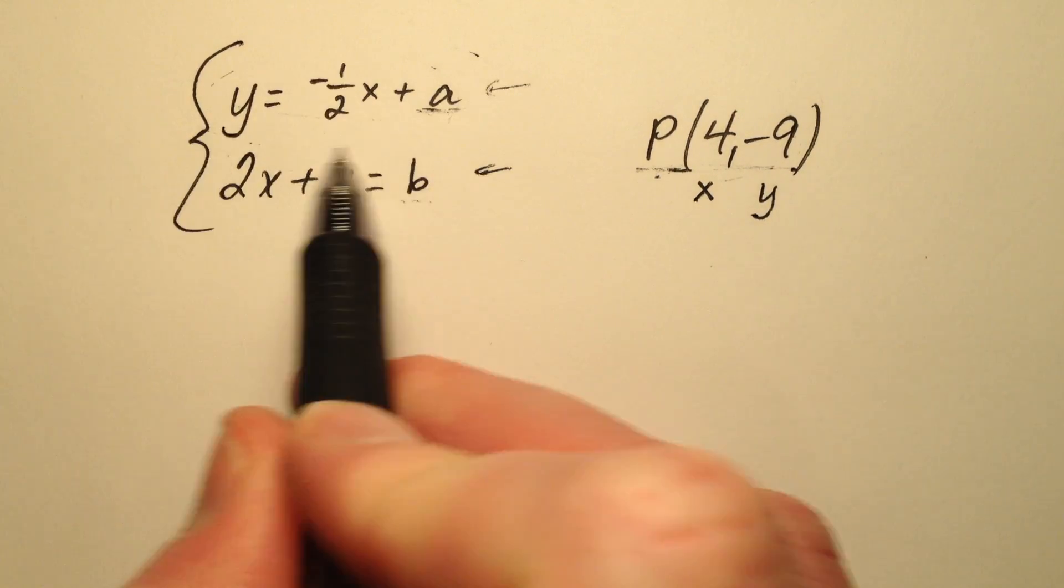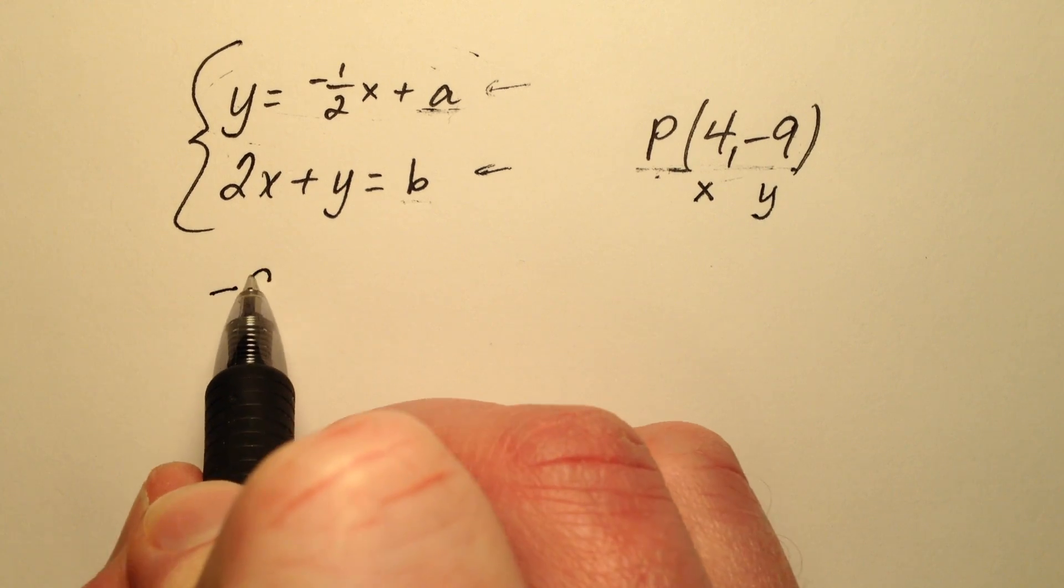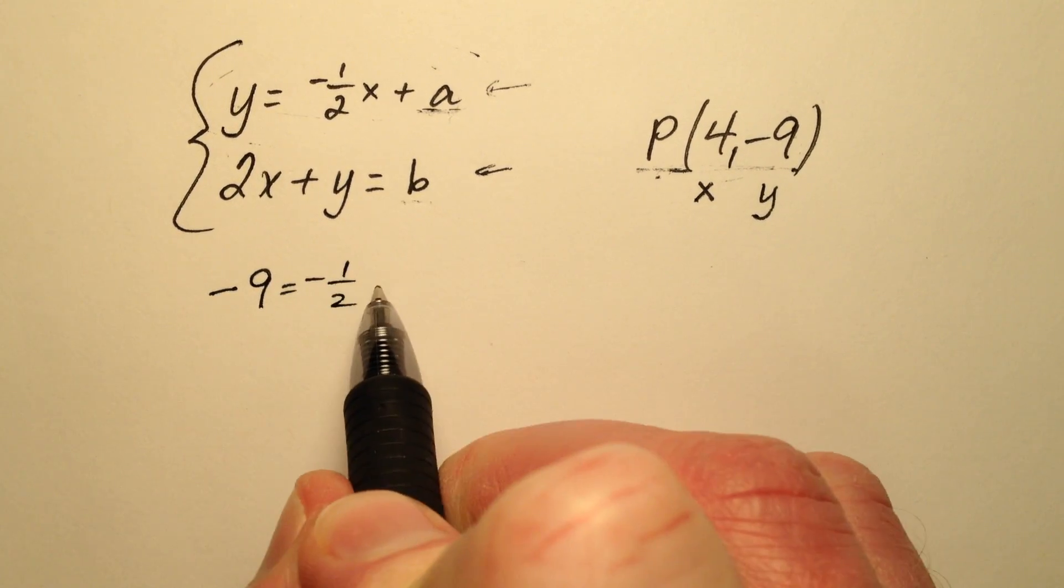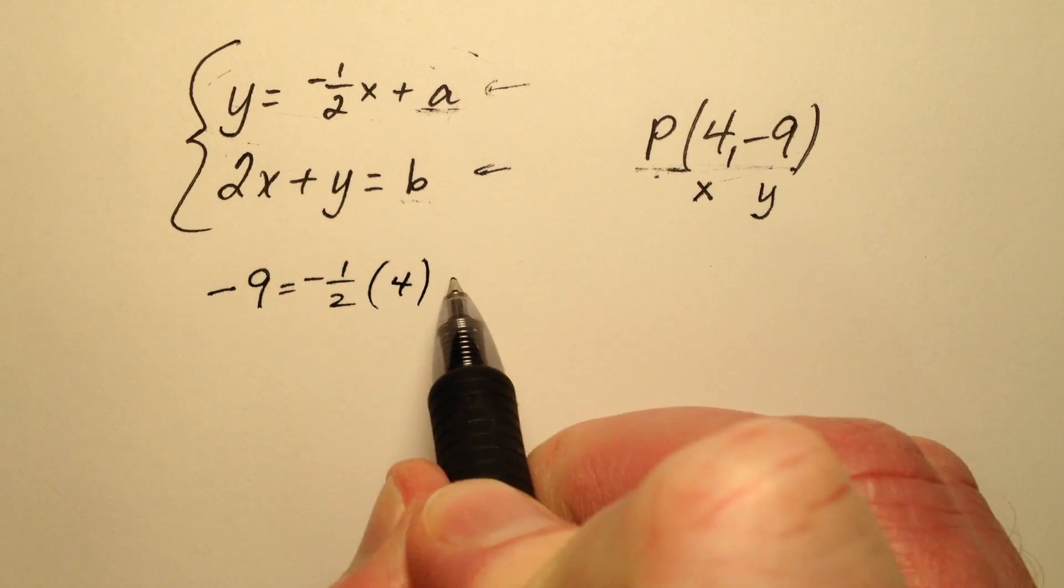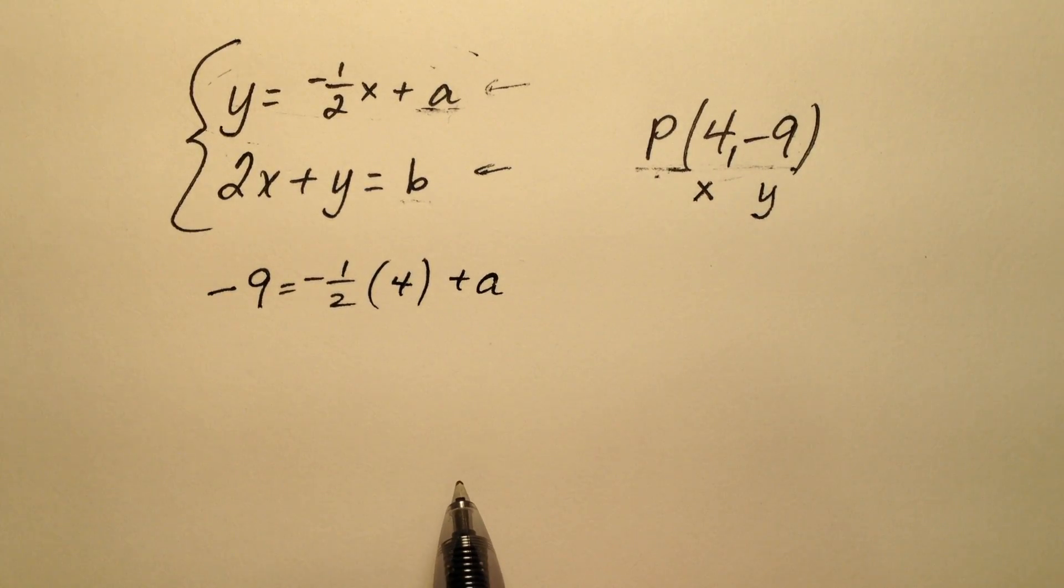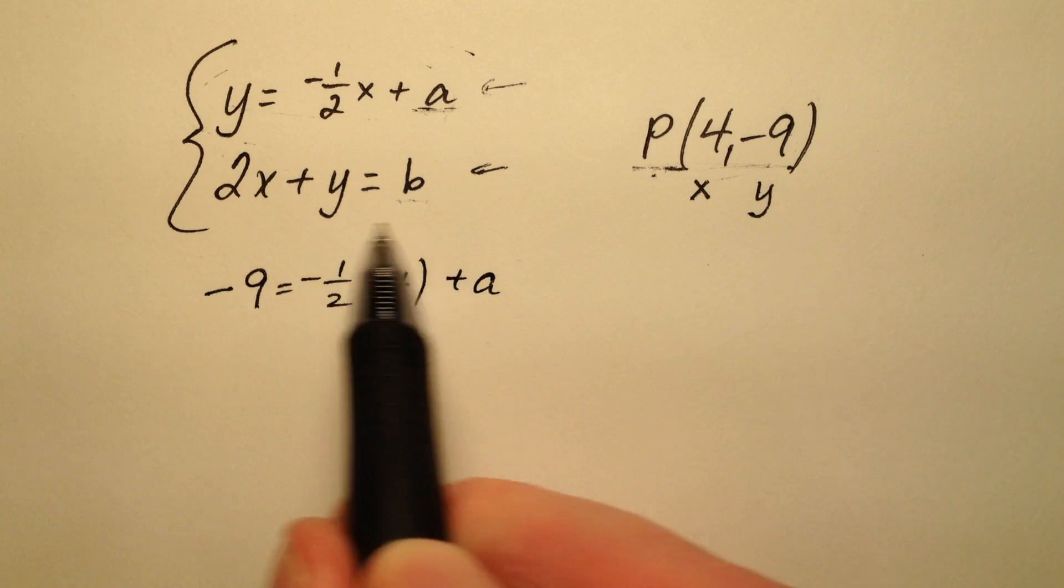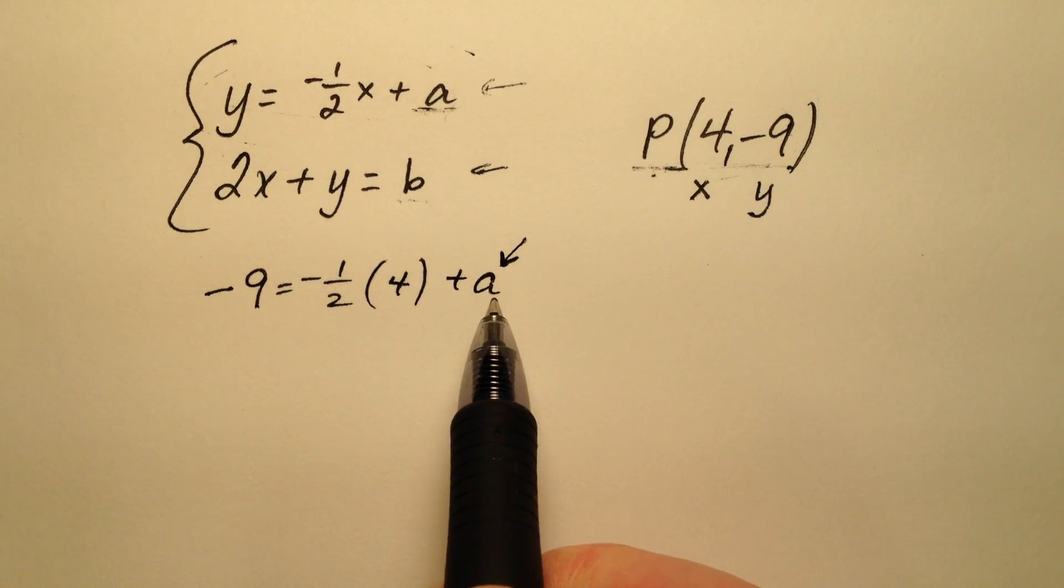Let's look at the first one first. So y will be negative 9 equals negative 1 half times x which is 4 plus a. What I see here is I have an equation with one variable a and I can solve for a.